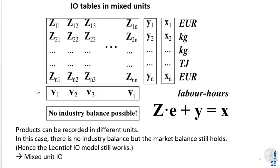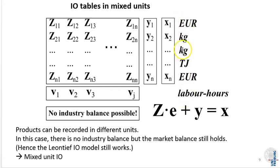A very important feature of input-output analysis is that it can handle different units. We can record services in euros, steel in kilograms, and electricity in terajoules. When we do this system-wide, we can still calculate the row balance — the market balance for each commodity — by adding up the different flows in their respective units. This means that in a mixed-unit input-output model we can still write down the market balance and derive the Leontief inverse. What is not possible in mixed units is to write down the industry balance, because the different Z flows have different units and cannot be added up.